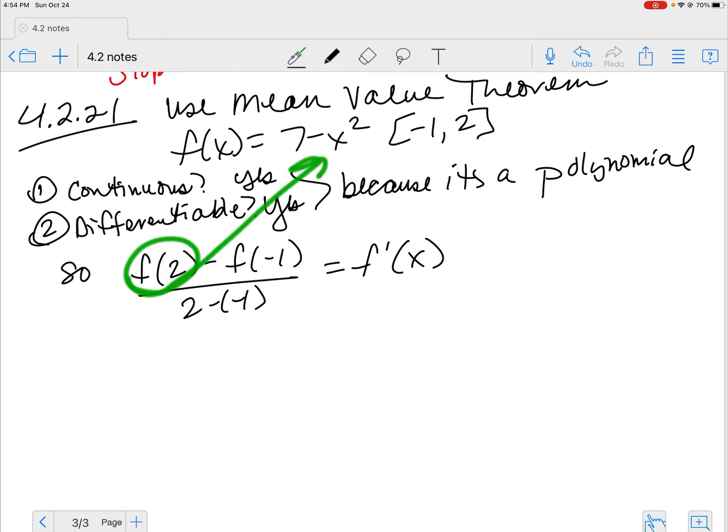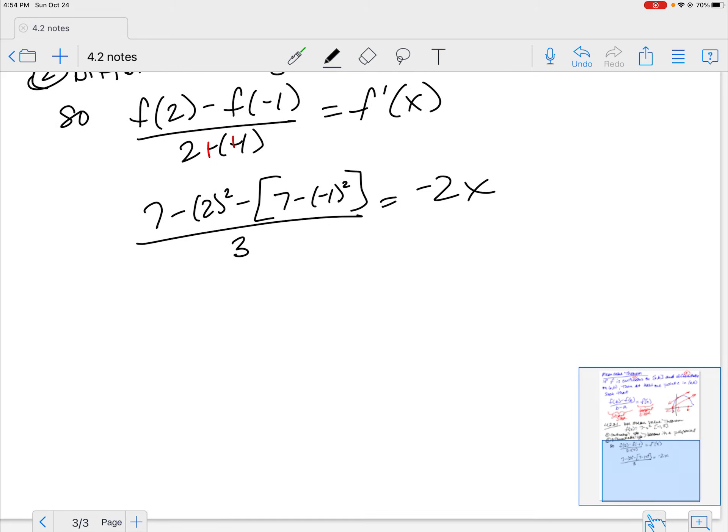Okay, let's plug everything in. If I plug in a 2, I have 7 minus 2 squared minus 7 minus a negative 1 squared all over 3, right, 2 plus 1, because you add the opposite. And then is equal to my derivative. My derivative here is a negative 2X. So ultimately, I want to figure out what is that X. We're going to solve for that X. Well, we need to simplify this left side over here a little bit more in order to pull that off. So 7 minus 4 minus 6, right, because it's going to be 7 minus 1.